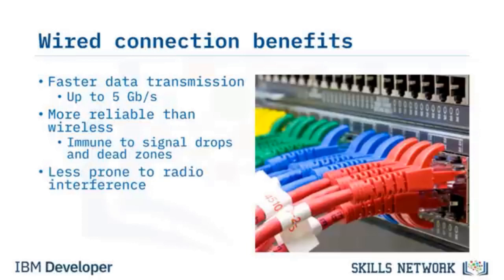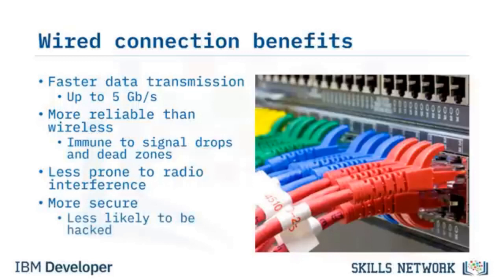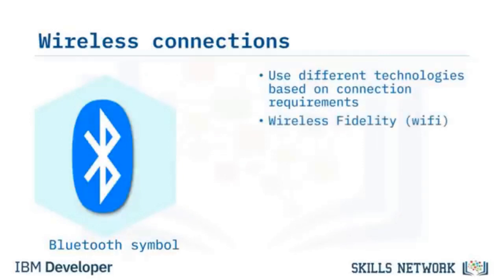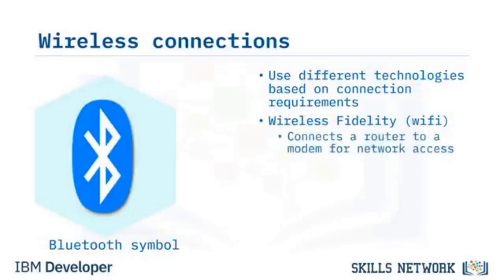As devices need to be physically connected in a wired connection, they are more secure and less likely to be hacked. Wireless connections use different technologies based on connection requirements. For example, Wi-Fi is used to connect computers, phones, tablets, smart TVs, and other devices to the Internet. It works by connecting a wireless router directly to an Internet modem. The router acts as a hub for all wireless-enabled devices within range to connect to a home network and the Internet. Newer modems have built-in routers to avoid the need for a separate device.